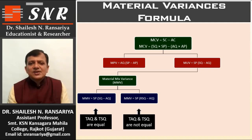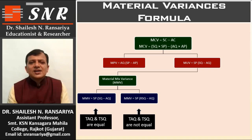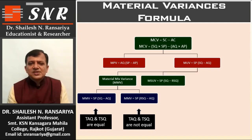We use the first MMV formula when Total Actual Quantity and Total Standard Quantity are equal; we use the second formula when TAQ and TSQ are not equal. If both are equal, then MUV equals MMV. For Material Sub-Usage Variance: MSUV = SP × (SQ − RSQ), where we subtract RSQ from SQ and multiply by standard price.